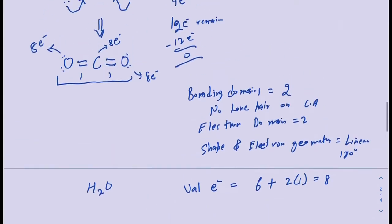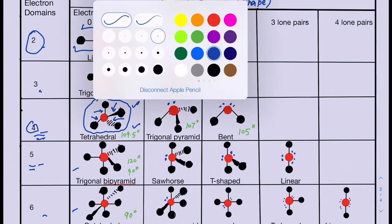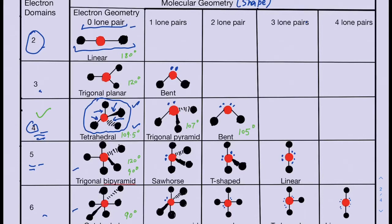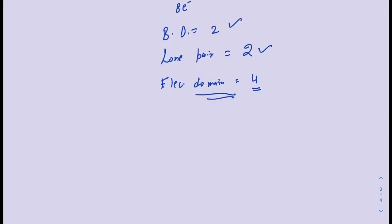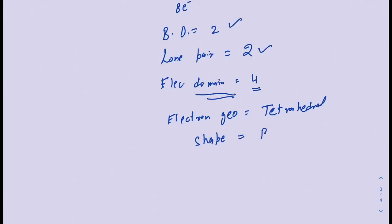Since we have four total electron domains, go back to the VSEPR chart. We have four electron domains with two lone pairs. The electron geometry, based on four electron domains, is still tetrahedral. But the molecular geometry — the shape — is different because of the lone pairs. Looking at the chart with four electron domains and two lone pairs, the shape is bent.